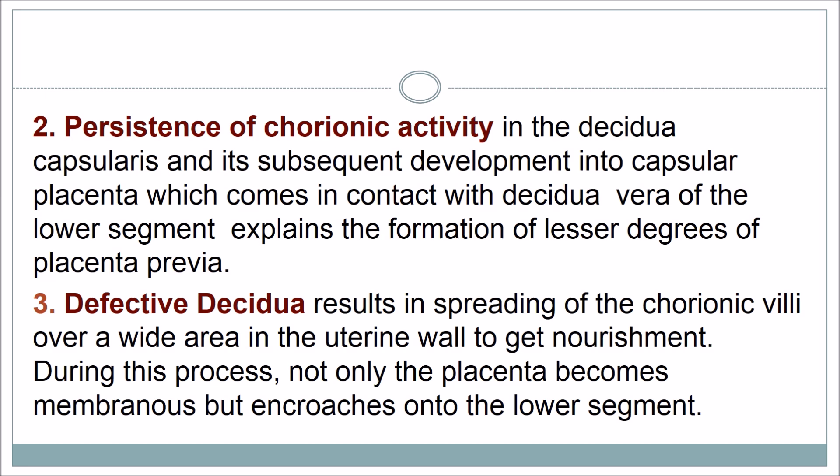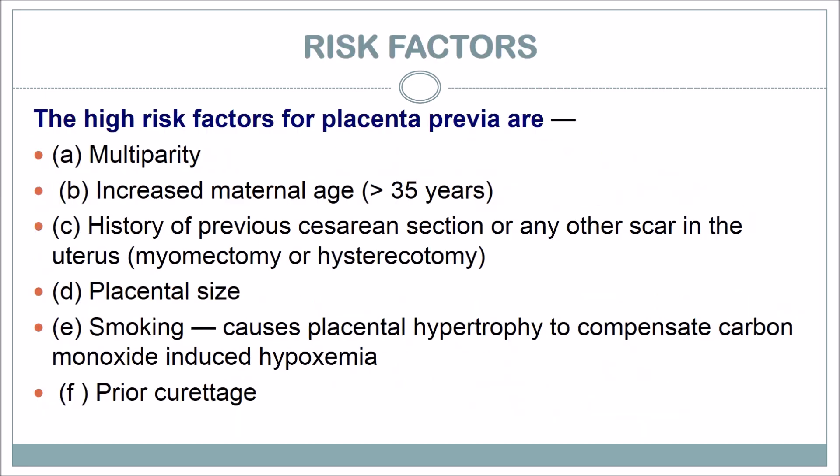The risk factors for placenta previa include multiparity, increased maternal age (more than 35 years), history of previous caesarean section or any uterine scar such as from myomectomy or hysterectomy, placental size, smoking — which causes placental hypertrophy to compensate for carbon monoxide-induced hypoxemia — and prior history of curettage.